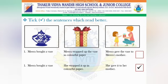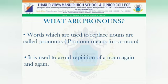Children, tell me which sentences read better. Yes, the second pair of sentences reads better. Because in the second pair, 'she' and 'her' are used instead of Meera, and 'it' is used instead of 'vase'. This makes the sentences shorter and easier to read. It prevents unnecessary repetition. So here we learn what pronouns are: words which are used to replace nouns are called pronouns. Pronoun means 'for a noun'. It is used to avoid repetition of a noun again and again.